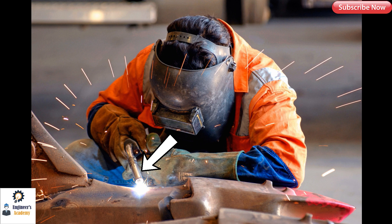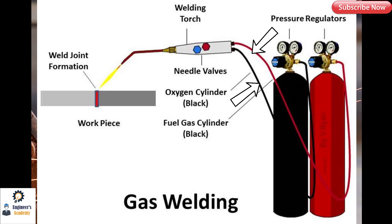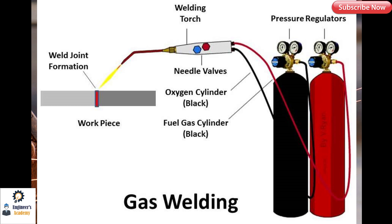The welding torch is the most important part of gas welding. Both the fuel gas and oxygen at suitable pressure are fed through hoses to the welding torch. There are valves for each gas which control the flow of gases inside the torch. Both gases are mixed there and form a flammable mixture. These gases ignite and burn at the nozzle, and the flame flows through the nozzle and strikes at the welding plates.